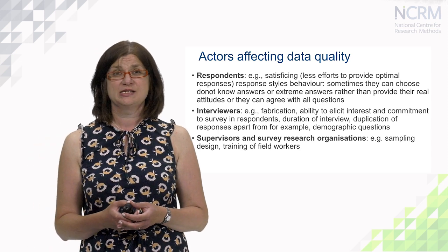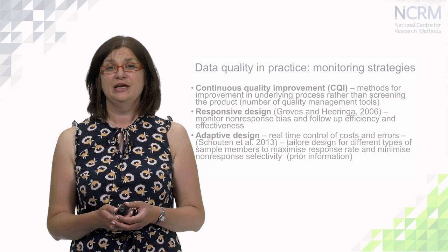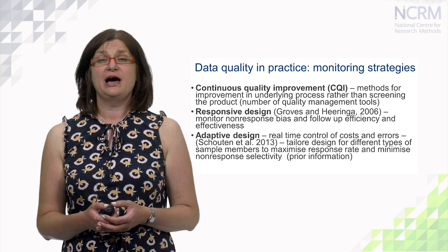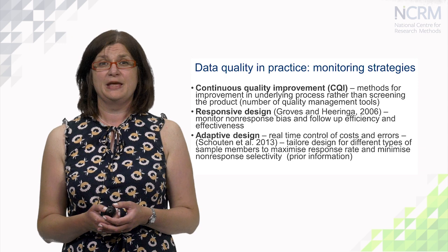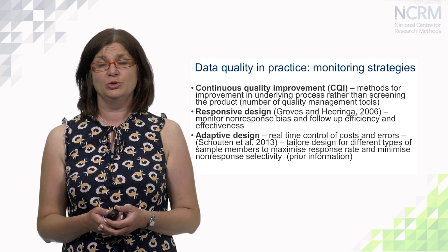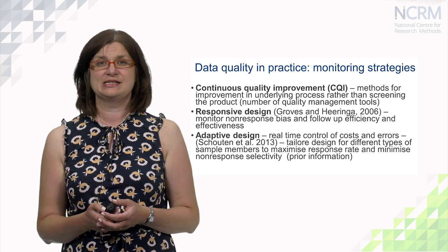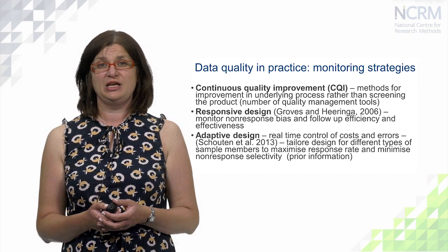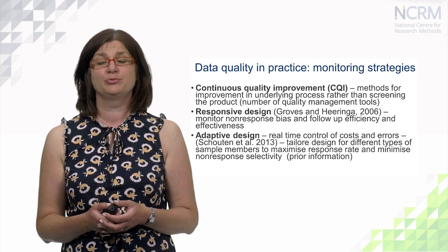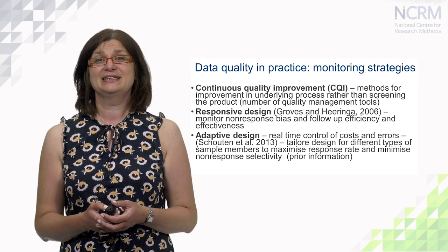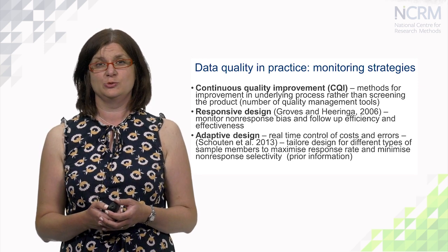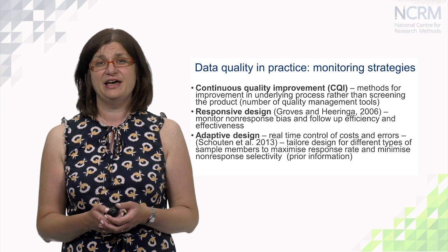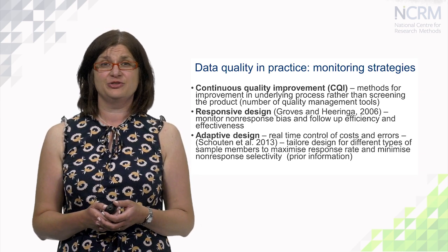There are different data quality monitoring strategies used by different statistical organizations. One of them is called continuous quality improvement, used not only in statistical organizations but in other industries and areas as well. This strategy involves methods for improvement in the underlying process rather than screening the product itself, and it contains a number of data quality management tools. There are also responsive and adaptive designs, which provide real-time control of costs and efforts — they are similar in some ways but different in others.